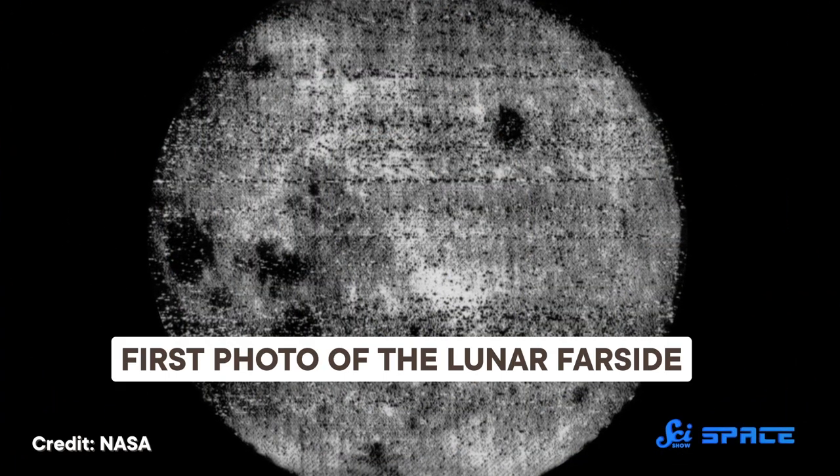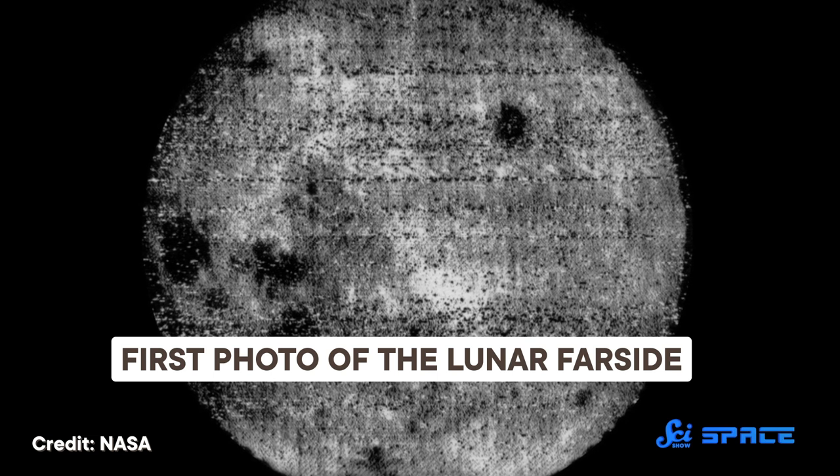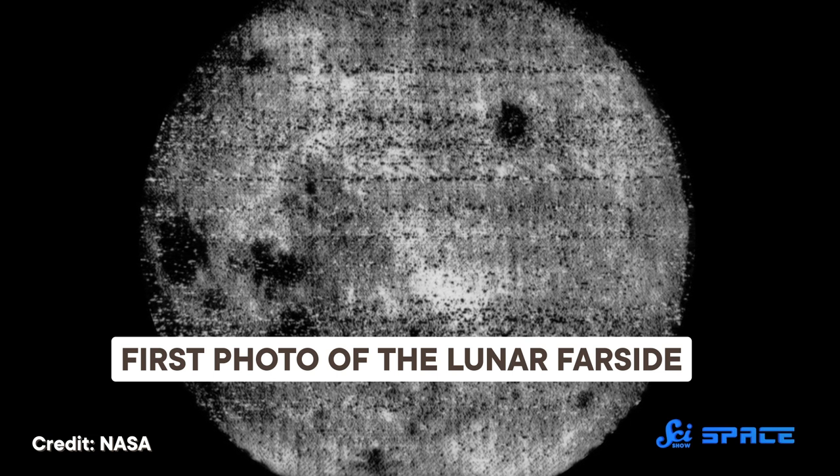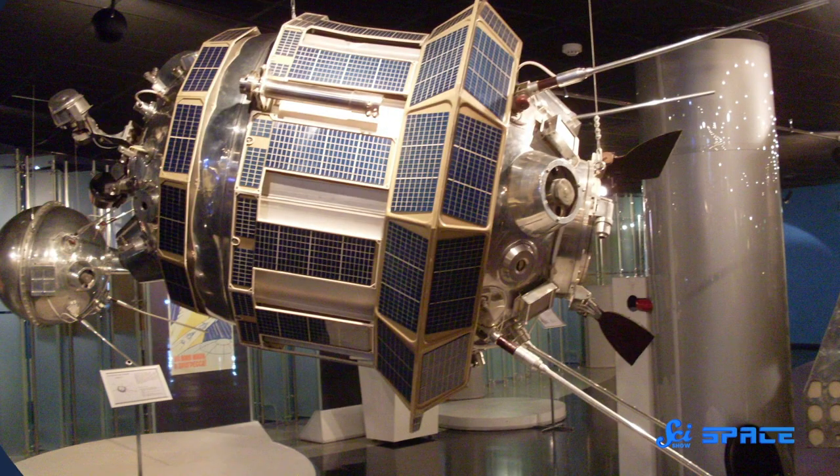In October 1959, we got our first pictures of the Dark Side of the Moon thanks to the former Soviet Union's Luna 3 spacecraft. It was the third spacecraft to go to the Moon. So two missions were complete before we even tried to snap some pictures of its far side, and it wasn't an easy feat.